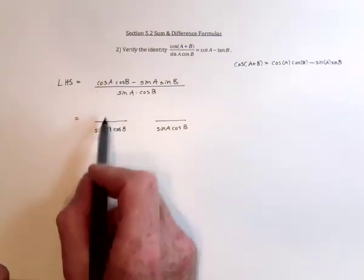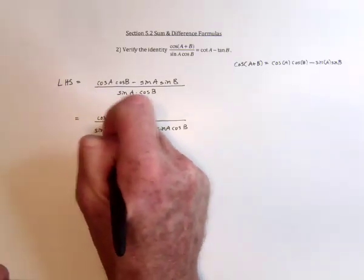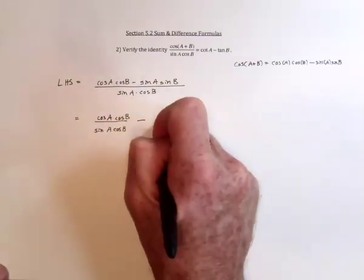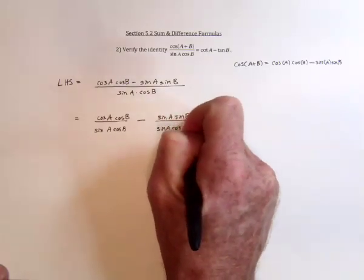And then just transfer the numerators over here. So we've got cosine a and cosine b, the subtraction sign in between, and then sine of a, sine of b.